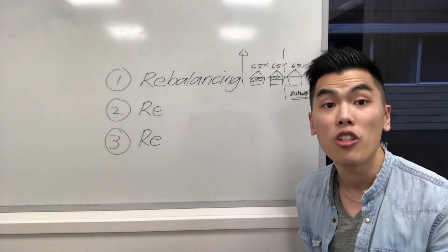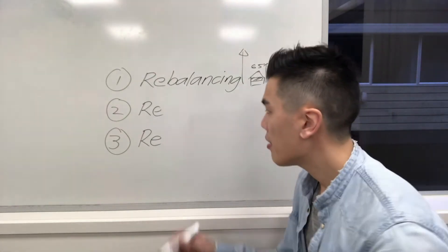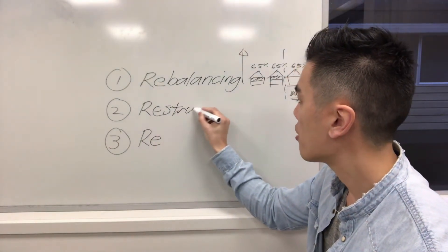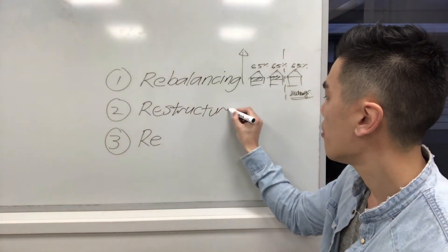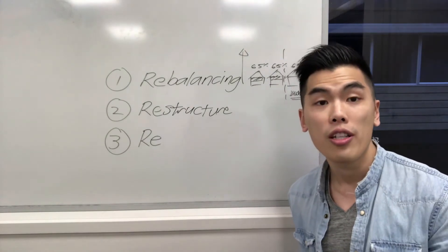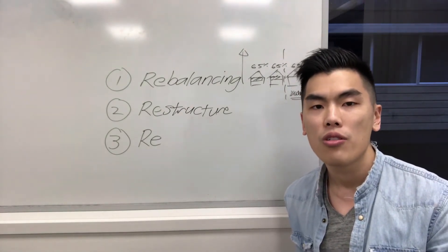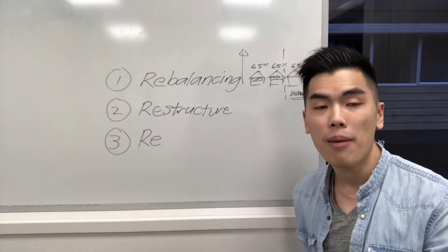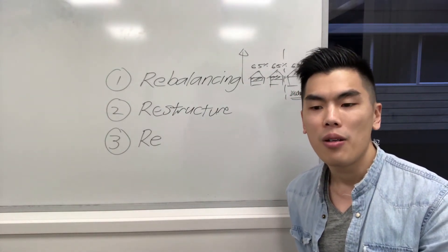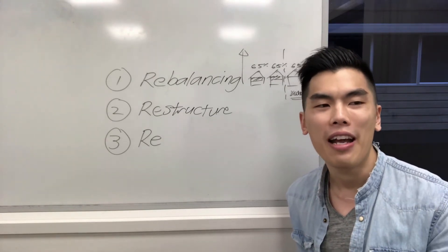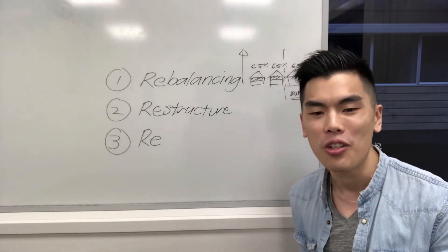The second thing you should consider is restructuring. Restructuring has to do with things like interest-only terms and minimizing your cash flow. One of the problems people have is that when the interest-only term comes up, they decide to go out and hunt for another interest-only term. But a lot of the time, because their position has changed, it's actually a lot harder to get that interest-only term extended.